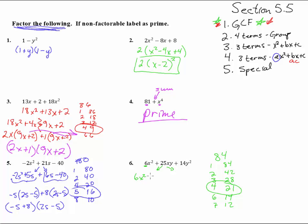So we have 6x² + 4xy + 21xy + 14y². Good. Now we have four terms, we can do grouping. Out of here we can pull a 2 and an x, and we're left with (3x + 2y).